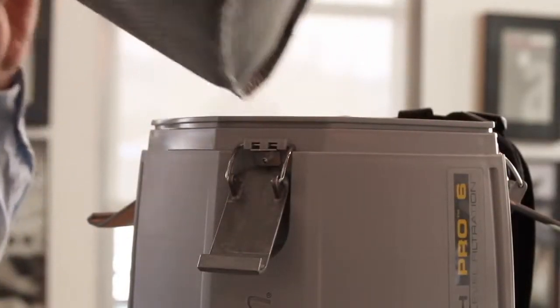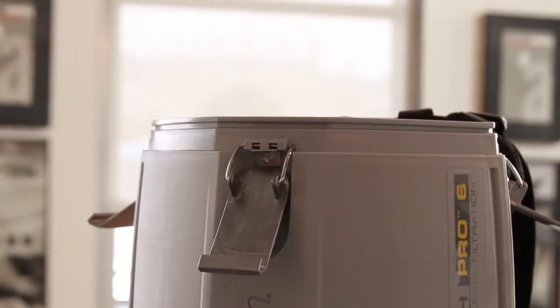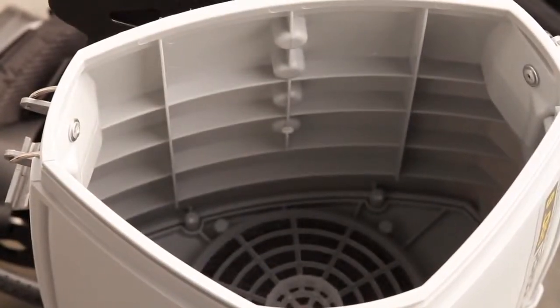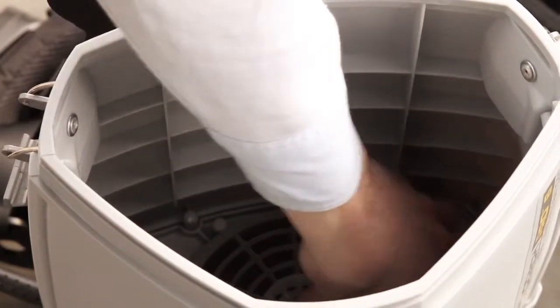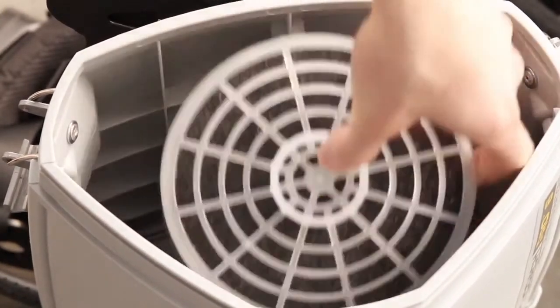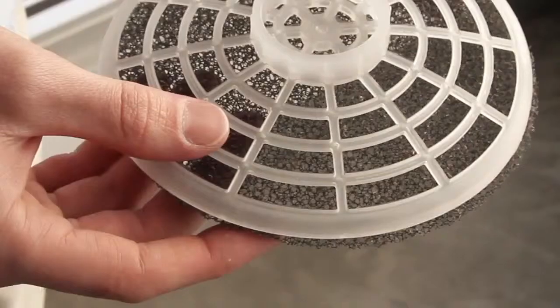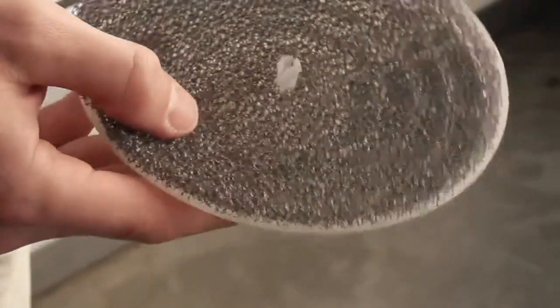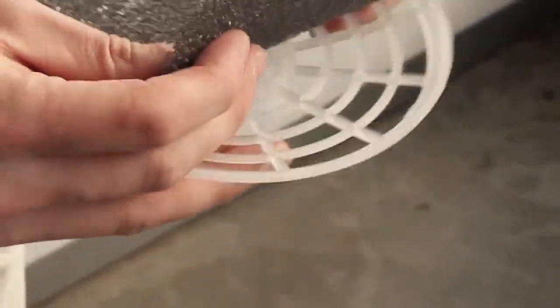To access the dome filter, first remove the Intercept microfilter and cloth filter. Reach into the vacuum body and pull the top piece of the dome filter off and remove the foam media. Shake it out, rinse it, and let it air dry thoroughly.